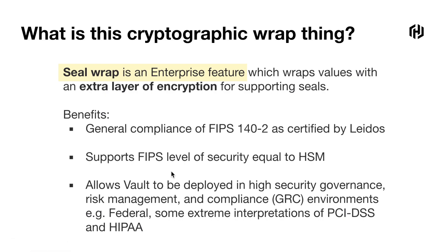You may ask what cryptographic wrap means. Seal wrap is an enterprise feature which wraps a value with an extra layer of encryption for the supporting seal. Here's the list of benefits you can get: if your organization needs FIPS 140-2 compliance, you can achieve that by using seal wrap with HSM or AWS KMS. That also supports a level of security equal to HSM, and it allows vault to be deployed in high-security governance, risk management, or compliance contexts — GRC — including PCI, PII, and HIPAA compliance.